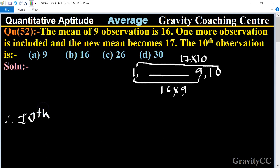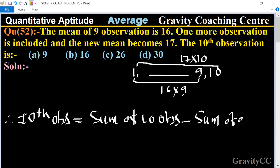The 10th observation is equal to the sum of 10 observations minus the sum of 9 observations.